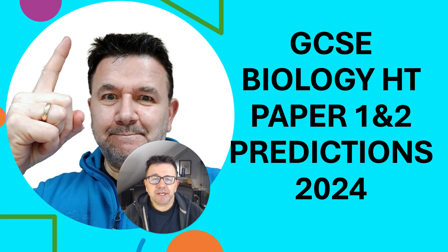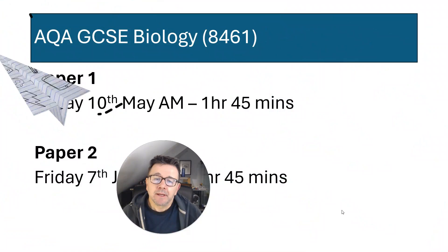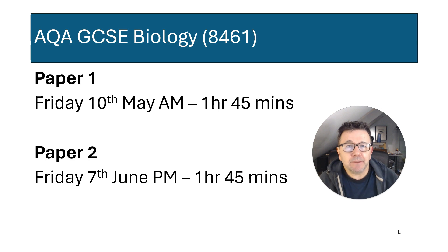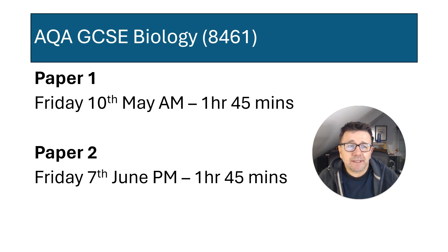Hi, it's Dr Biology and this is GCSE Biology Higher Tier. My predictions for paper 1 and 2 for 2024. Your exams: paper 1 is on Friday the 10th of May in the morning, and paper 2 is Friday the 7th of June in the afternoon. So you can see there's four weeks in between paper 1 and paper 2.